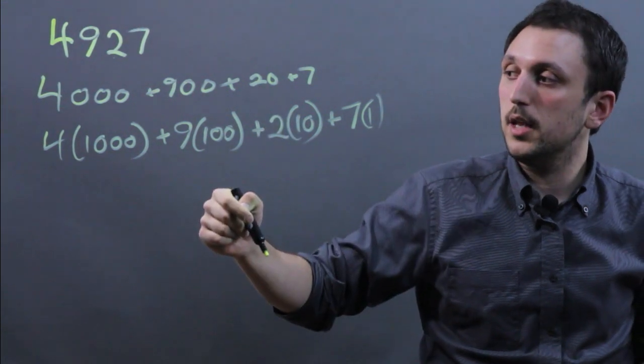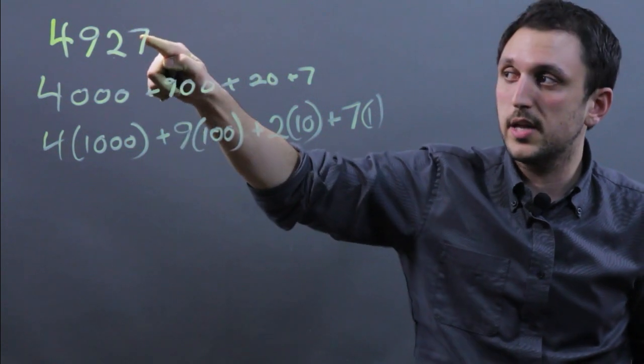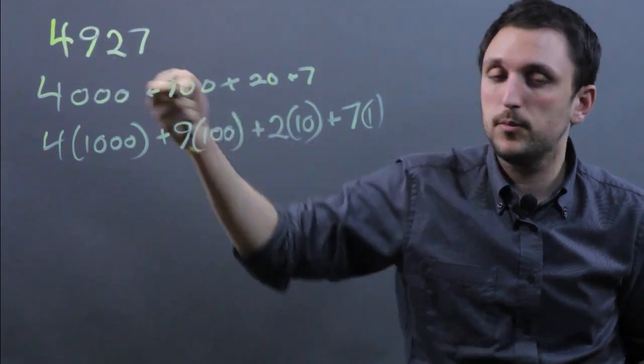Now, if we want to convert that to powers of 10, basically the units digit, the ones place, is always 10 to the 0, 10 to the 1, 10 to the 2, 10 to the 3.